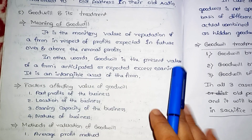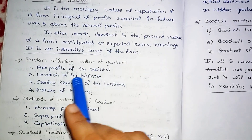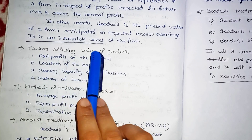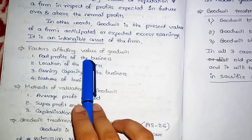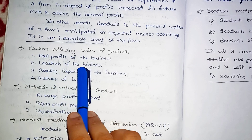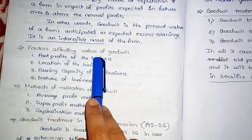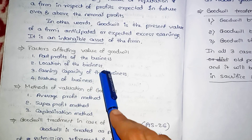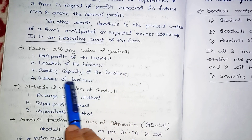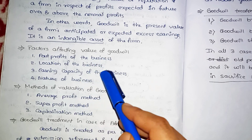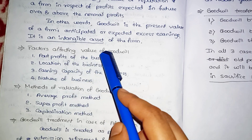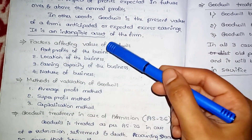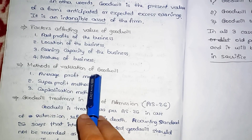This sentence is very important. Factors affecting the value of goodwill: past profits of the firm, location of the business, reputation of the firm, earning capacity of the firm, and the nature of the business. These factors are important for two-mark questions.